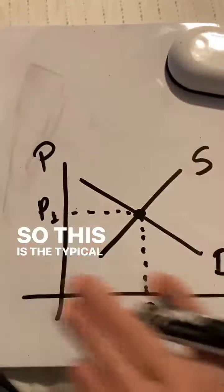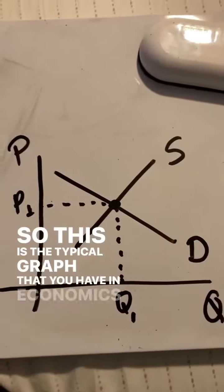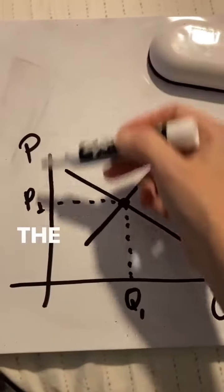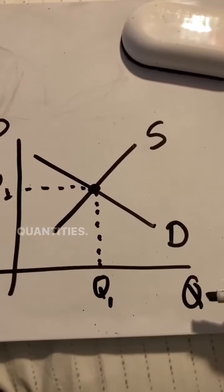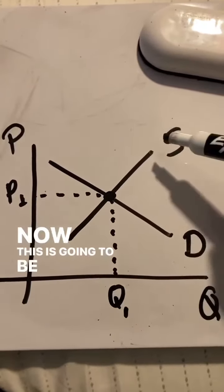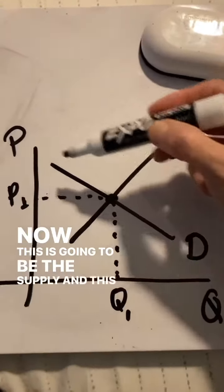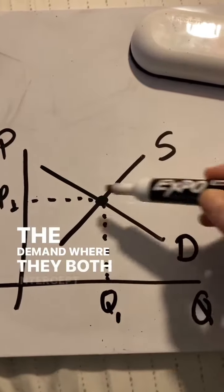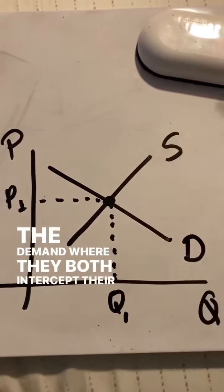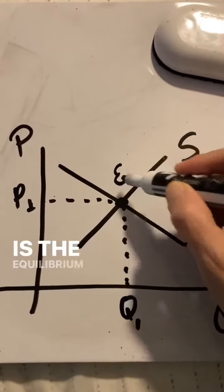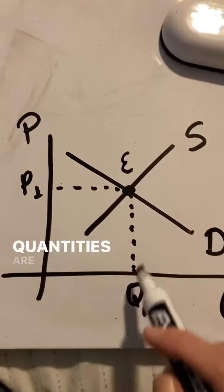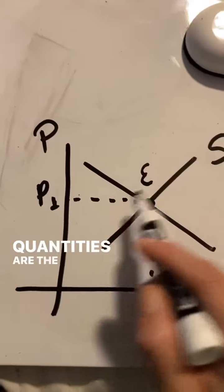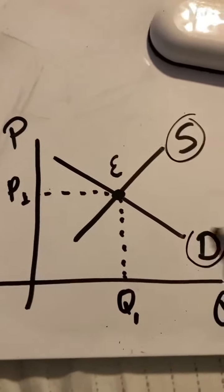Let me show you an example. This is the typical graph that you have in economics where the Y is going to be the price and the X is going to be the quantities. This is going to be the supply and this is going to be the demand where they both intercept at their own equilibrium.